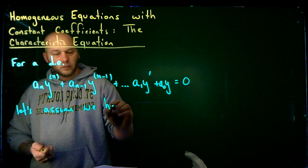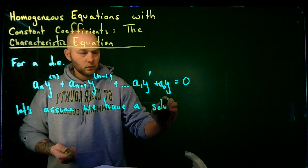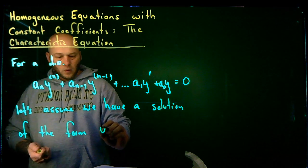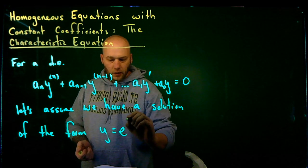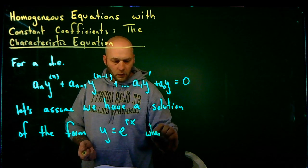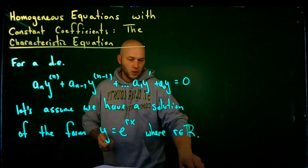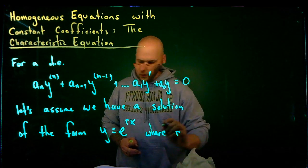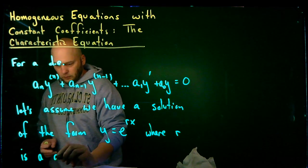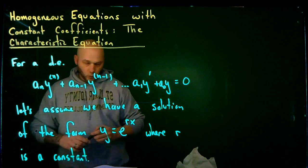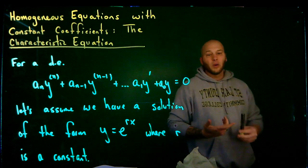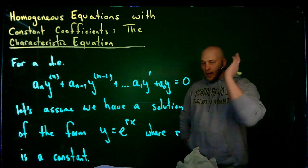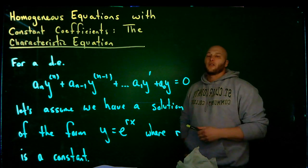For this differential equation, let's assume we have a solution of the form y equals e to the rx, where r is a constant. As we'll see, the value of r could actually be a complex number as well. So I have an exponential solution to this differential equation.